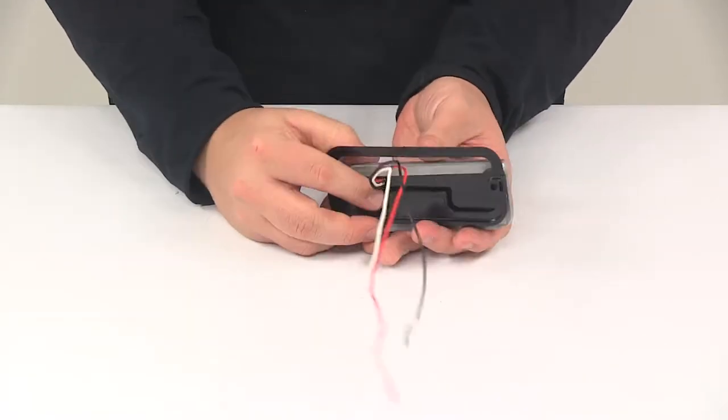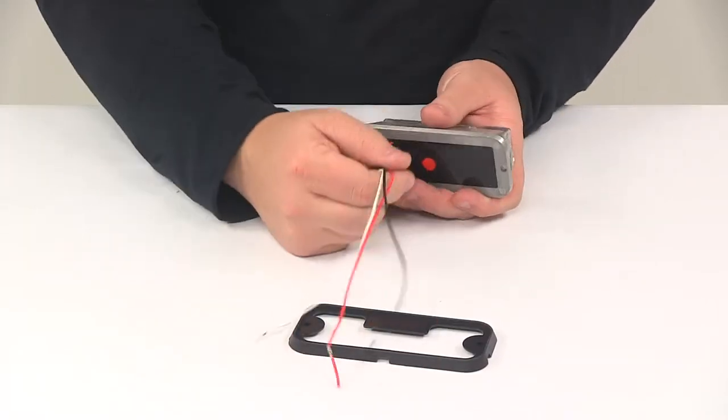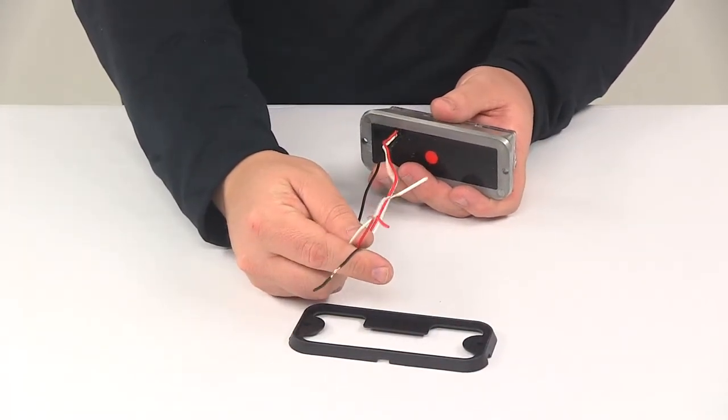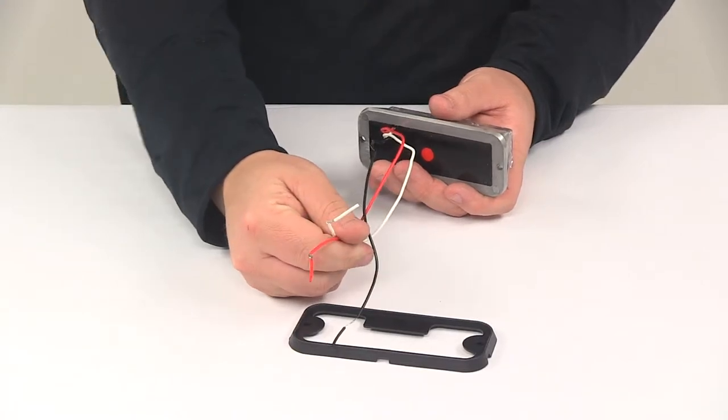This unit contains a three wire design. You're going to have your white wire, which is ground. Black is for the constant light function. Red is for the strobe.